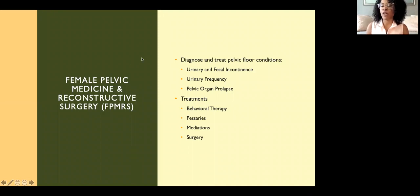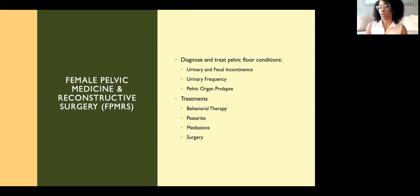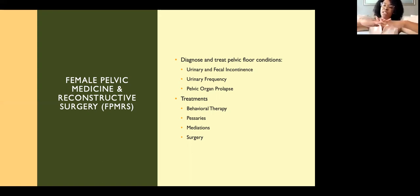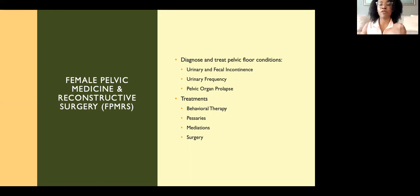Female pelvic medicine and reconstructive surgeons — FPMRS, or urogynecologists — diagnose and treat pelvic floor conditions. These include urinary and fecal incontinence, urinary frequency issues, and pelvic organ prolapse, where organs in the pelvic floor begin to shift and essentially fall through. I describe the pelvic floor like a bridge — when parts of it break down, things fall through. These surgeons can reconstruct the pelvic floor, and also provide treatments including behavioral therapy, pessaries, medications, and surgery.